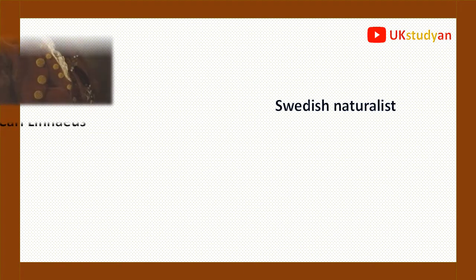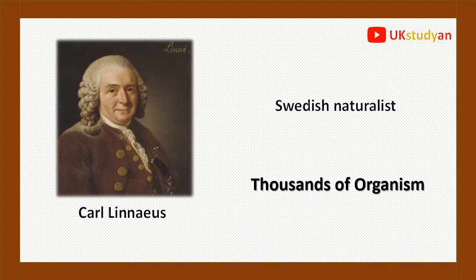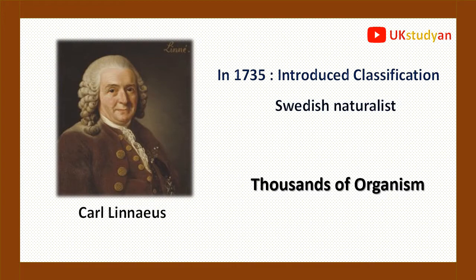There was a Swedish naturalist named Carl Linnaeus who got the same kind of puzzle. He saw thousands of organisms in nature which were unknown, so in 1735 he introduced classification. He decided to classify new organisms in order to study them more properly.